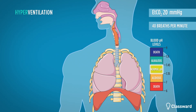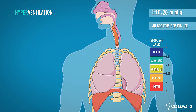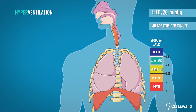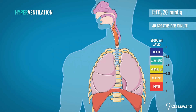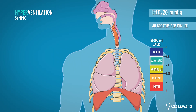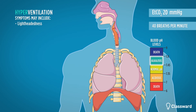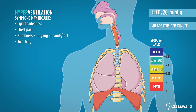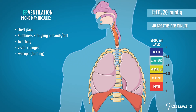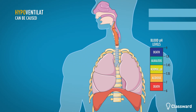When we hyperventilate, our bodies blow off carbon dioxide, causing a rise in pH. When the pH of our blood rises, our bodies become more alkalotic. Symptoms may include lightheadedness, chest pain, numbness and tingling, twitching, vision changes, and syncope.